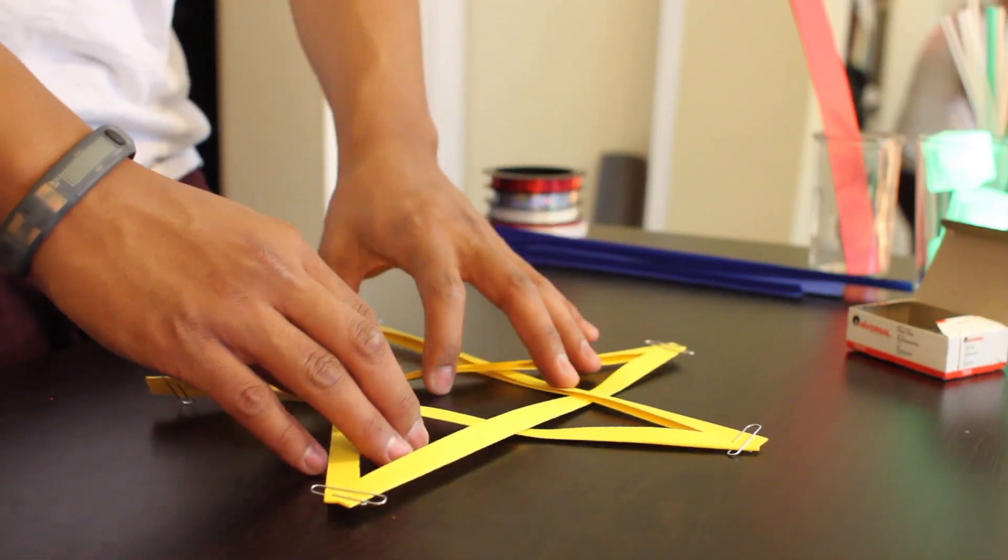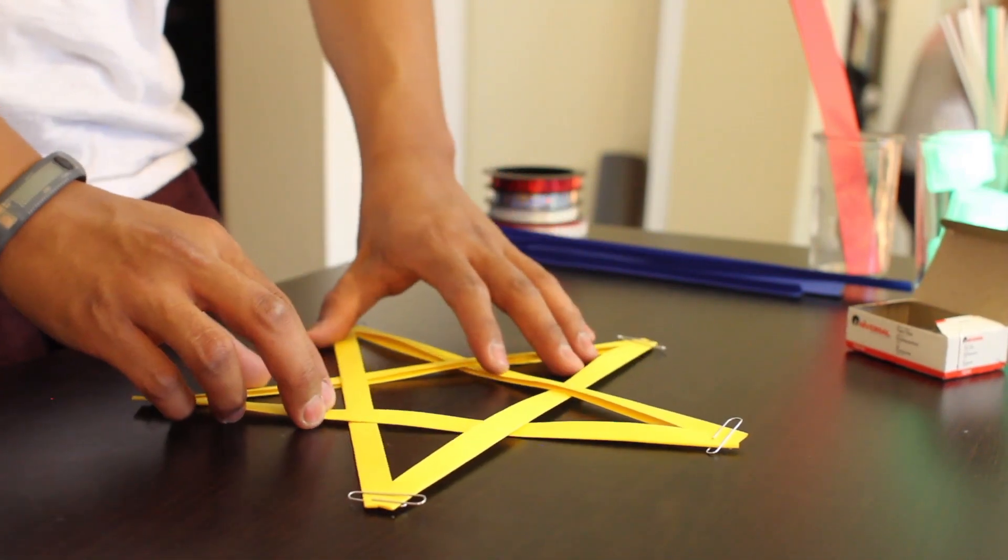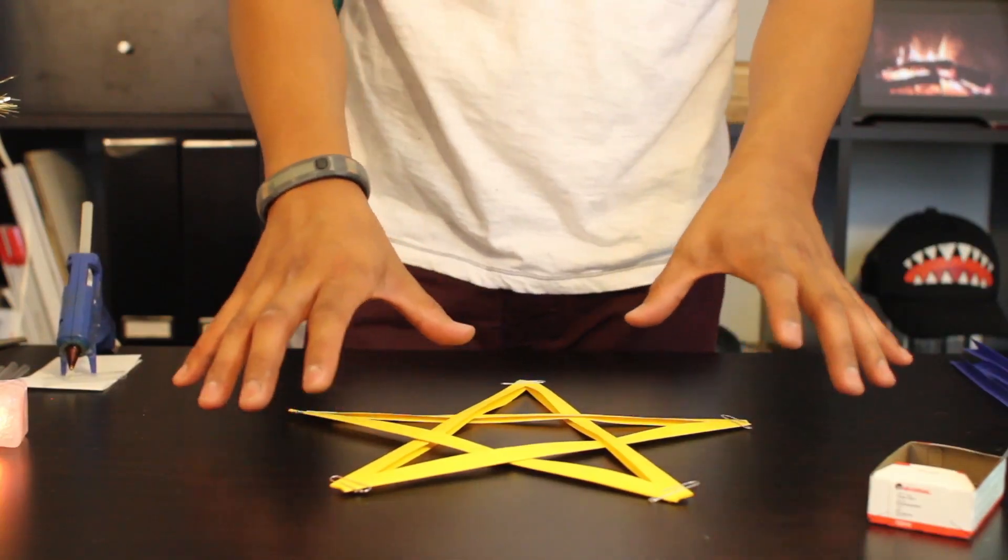Move your star around to create an equilateral star. Once you've set your star,